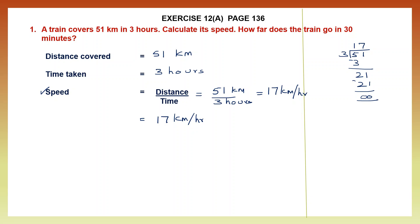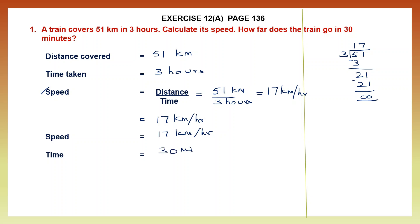Now we have found the first part of the question. Now let's go on to the second part: how far does the train go in 30 minutes? The speed of the train we just found out is 17 kilometers per hour. Now the time is 30 minutes. We know 1 hour is 60 minutes, so 30 minutes is half an hour, or we can write it as 0.5 hours.